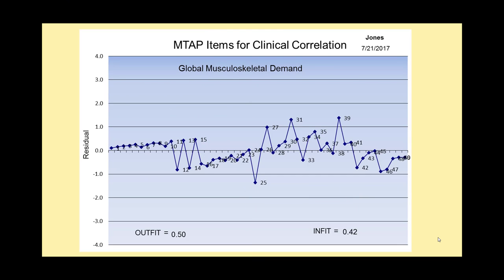This is the graph of MTAP items that you can use for clinical correlation. This is for Cindy Jones, conducted on July 21, 2017. What you see are each of the 50 item responses made by Cindy as she went through the MTAP. Basically, this is a profile of the degree to which each of Cindy's responses varies from the expected response we would have if she had a perfect pattern of responses. The degree that she varies from the perfect pattern is indicated by two statistics: one called outfit, and the other called infit.